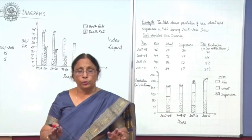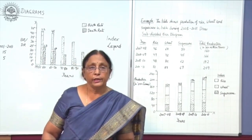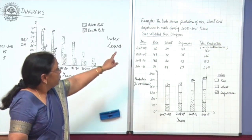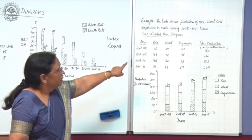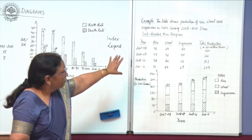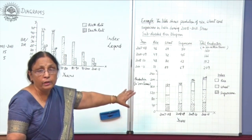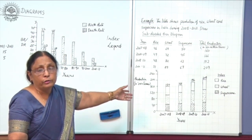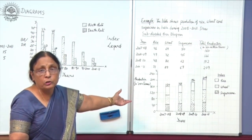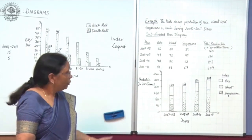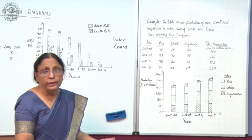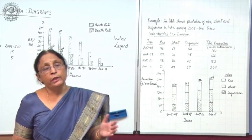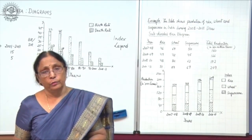Data is given regarding three crops, so three variables are given here. This is why we draw the subdivided bar diagram. We can draw a multiple or triple bar chart also — it can be shown in triple bars, it can also be shown in subdivided form.